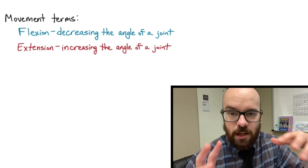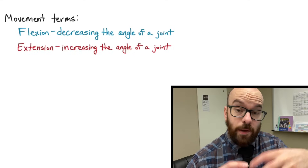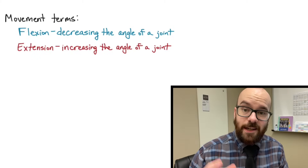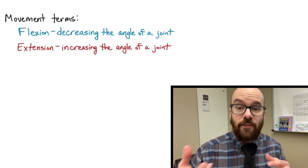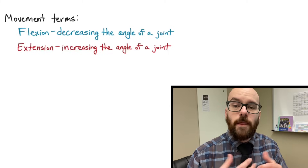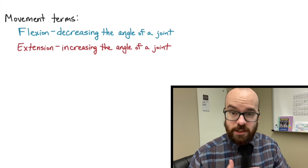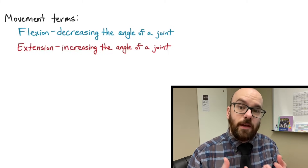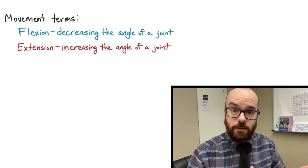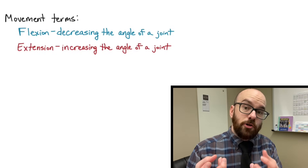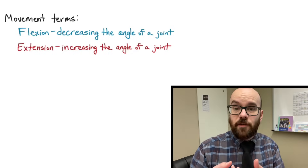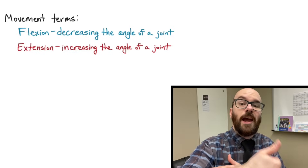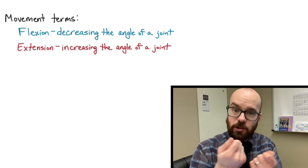This idea of opposite movements gets into one of the big ideas of this video: antagonist pairs. In the example of bending and extending the elbow joint, we have an antagonistic pair of muscles. The biceps will flex the joint, decreasing the angle; the triceps do the opposite and extend the elbow joint. If your bicep is contracting then your tricep is relaxing, and vice versa — that's an antagonist pair.